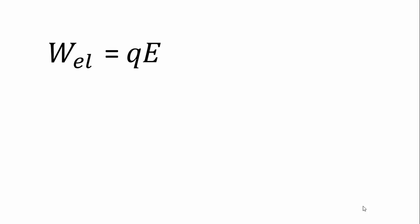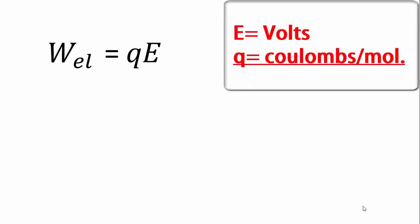Here E is the potential difference between the fuel cell terminals and Q is the total charge transferred in the fuel cell reaction, which is expressed in coulombs per mole. Now the question is how much charge will be transferred in a fuel cell reaction per mole of hydrogen?